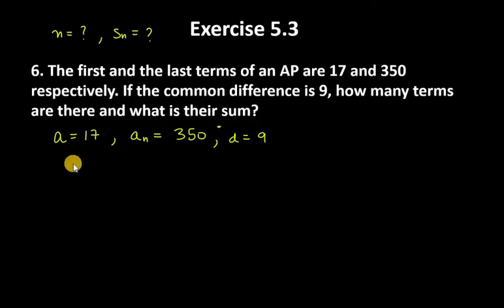First you have to find N and then find the sum. Using the an formula, an equals 350, a equals 17, N is unknown, and D equals 9.